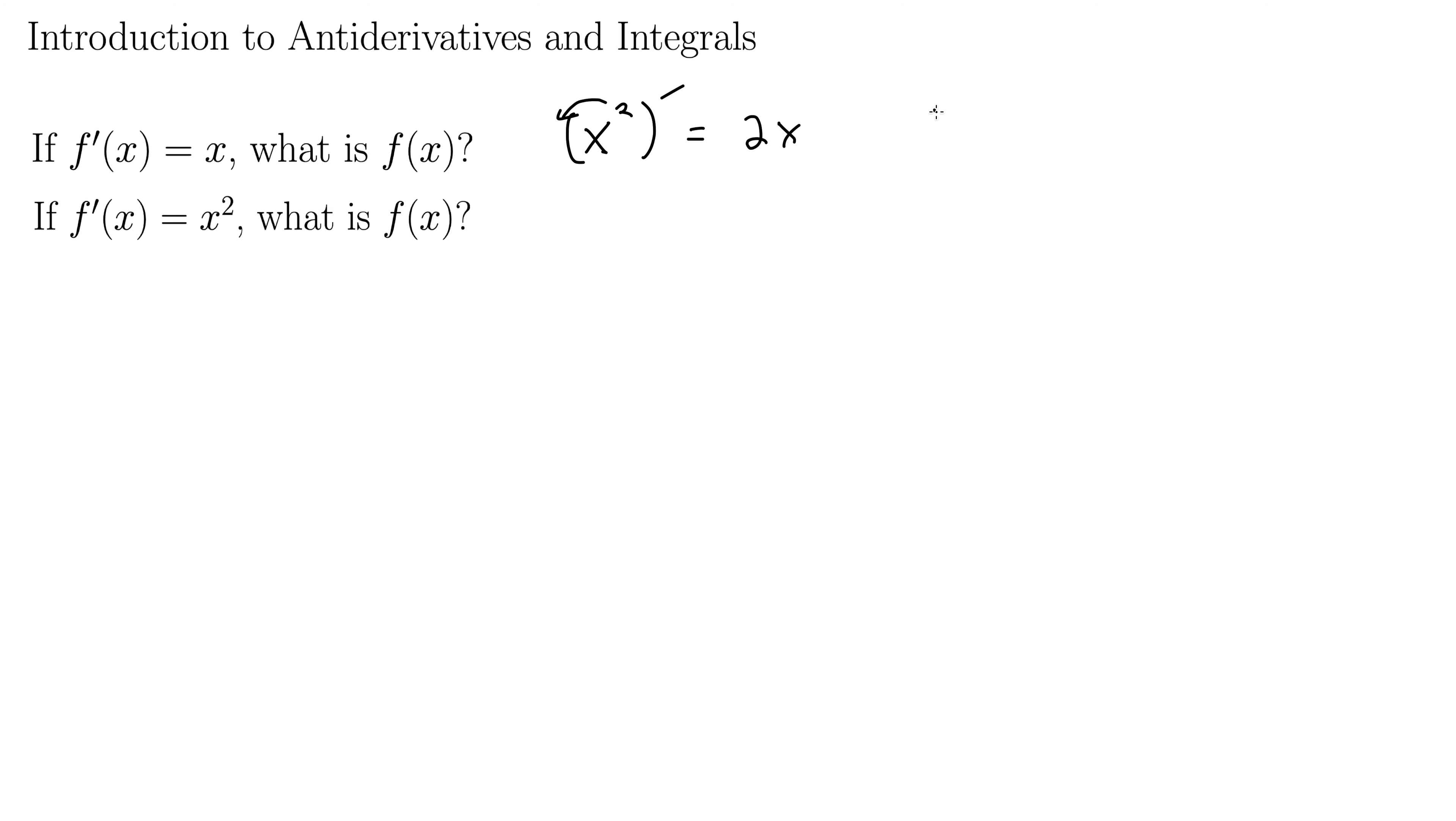What if we tried x squared over 2? Take the derivative of that. The 2 comes down and then we have the 2 in the denominator, x. Those 2's cancel, leaving us with x. So if the derivative of this function equals x, we've determined that the original function must be x squared over 2. f(x) must be x squared over 2.